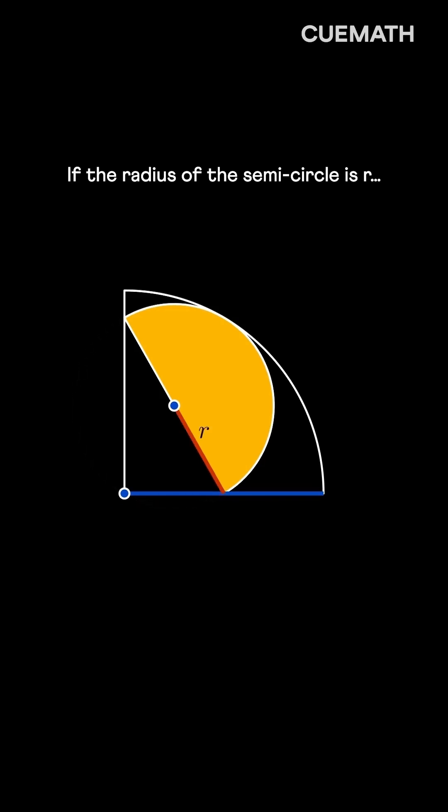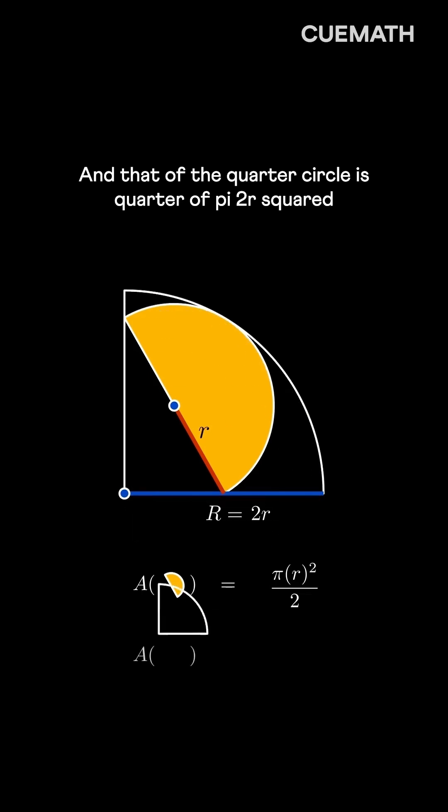If the radius of the semicircle is r, then this must be 2r. Now, the area of the semicircle is half of pi r squared, and that of the quarter circle is quarter of pi 2r squared.